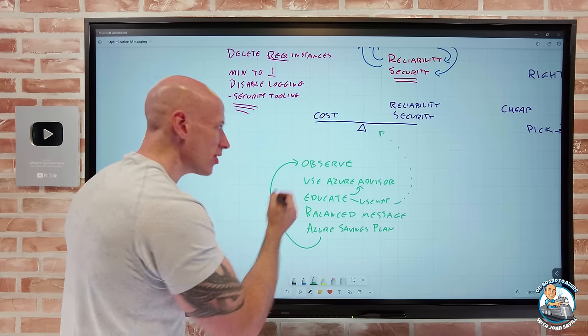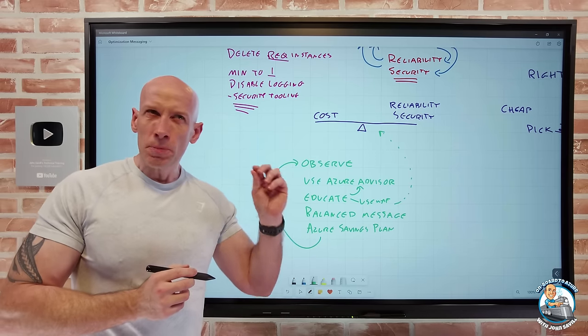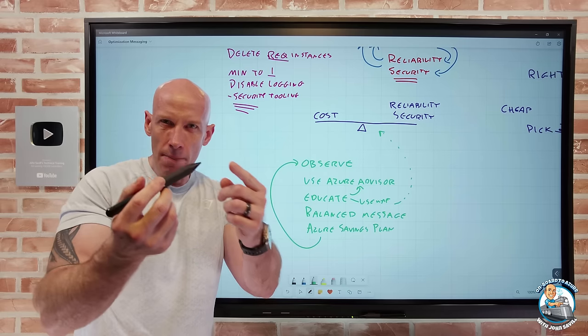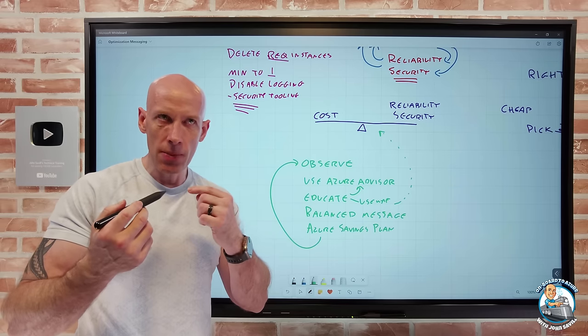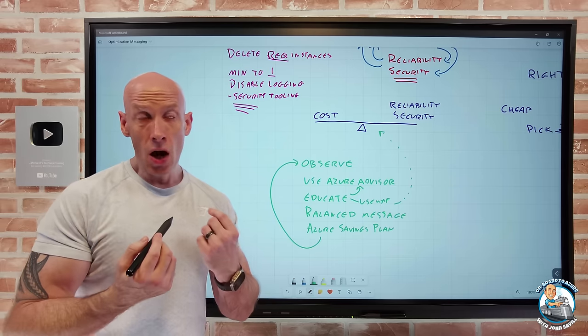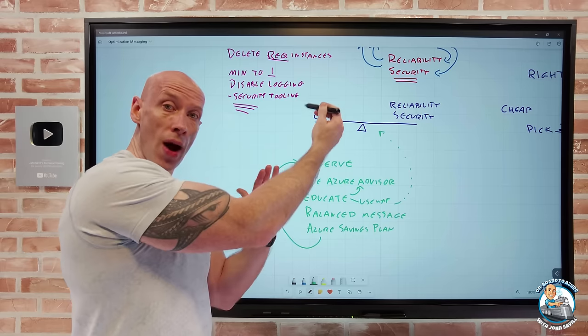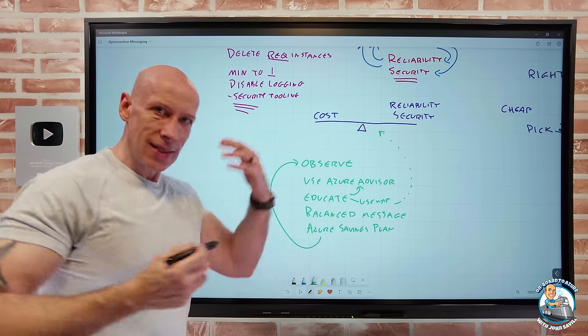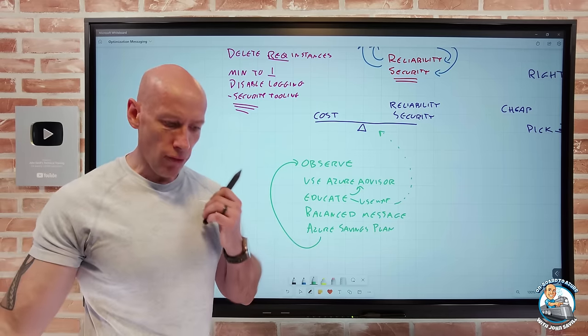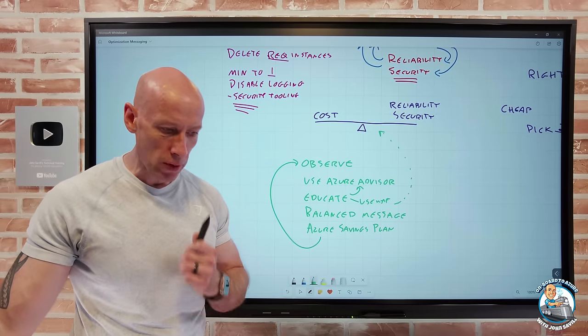And then we'll come back. We'll carry on observing. We're going to observe, well, are we seeing an increase in reliability issues? Are we seeing an increase maybe in service tickets being raised? Are we seeing an increase in some security flags? Maybe things have tipped the wrong way. We need to adjust the messaging. Let's get people back into the right frame. And that's really an important thing.